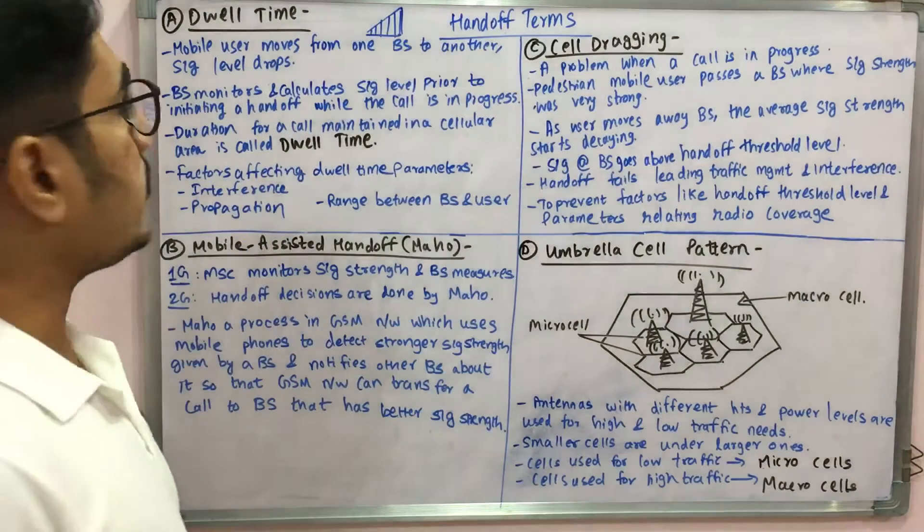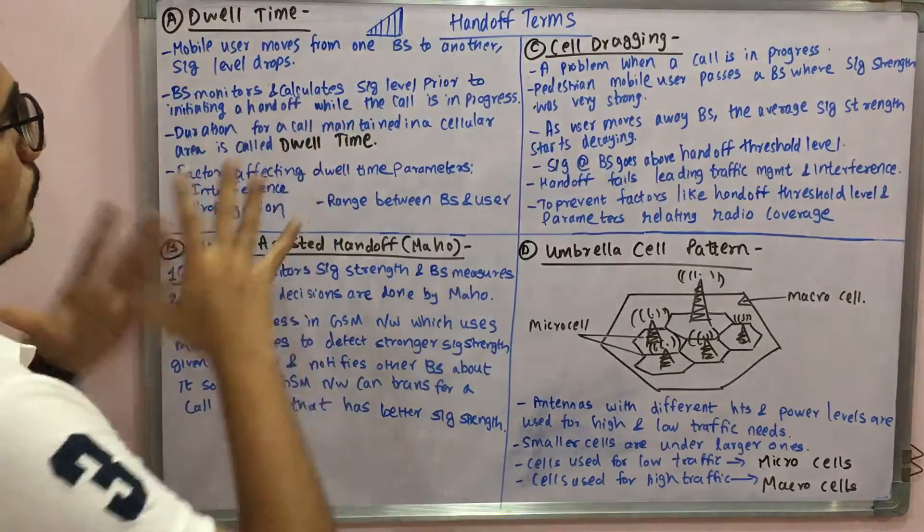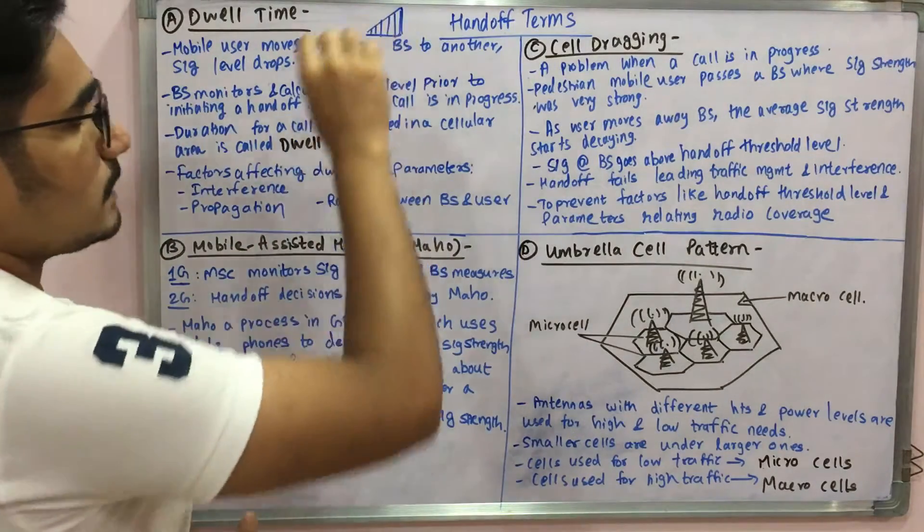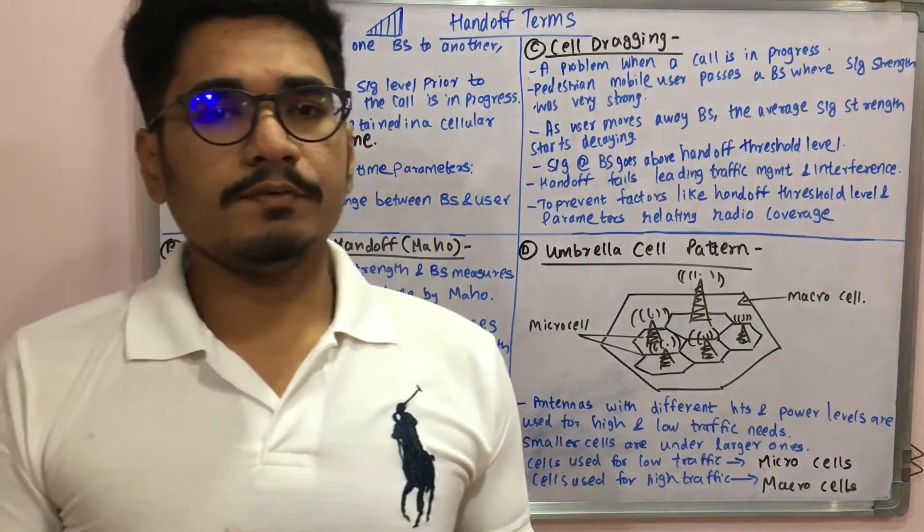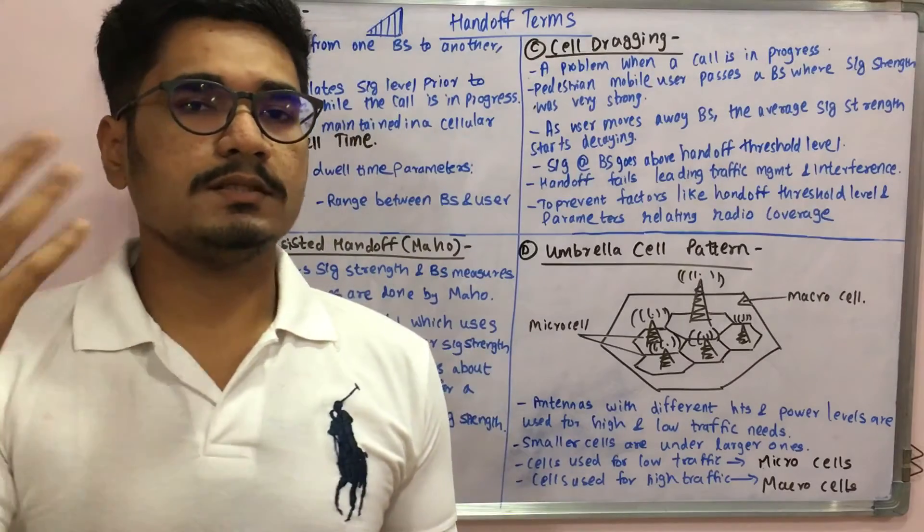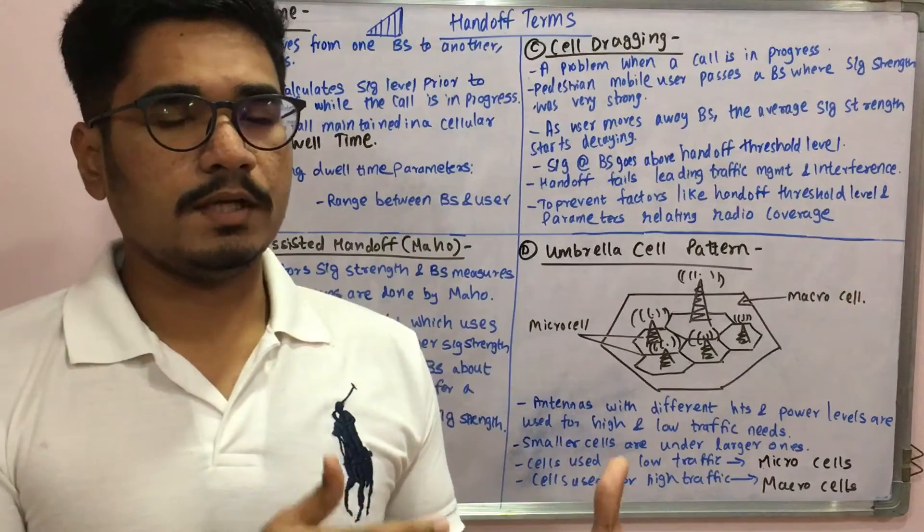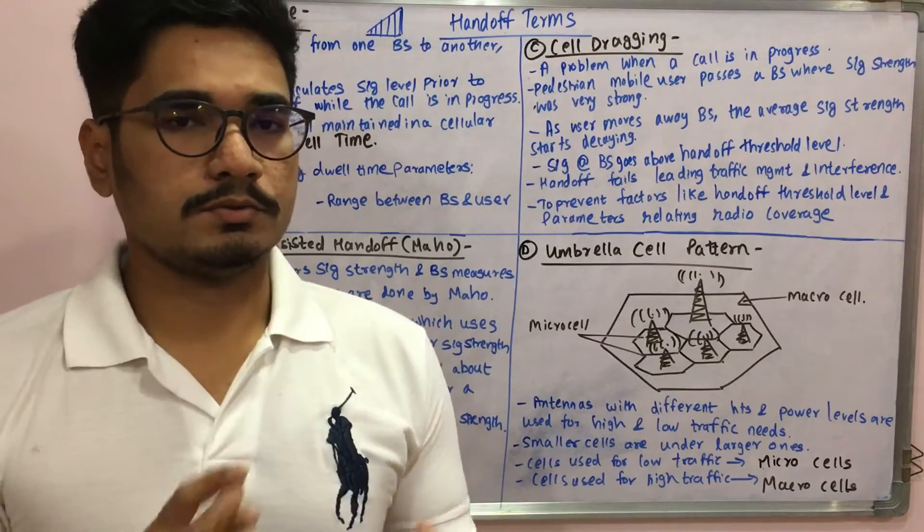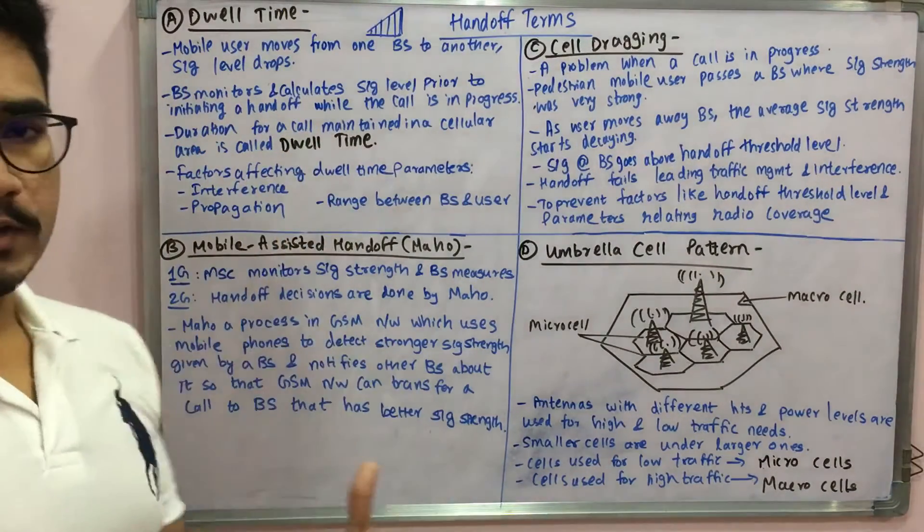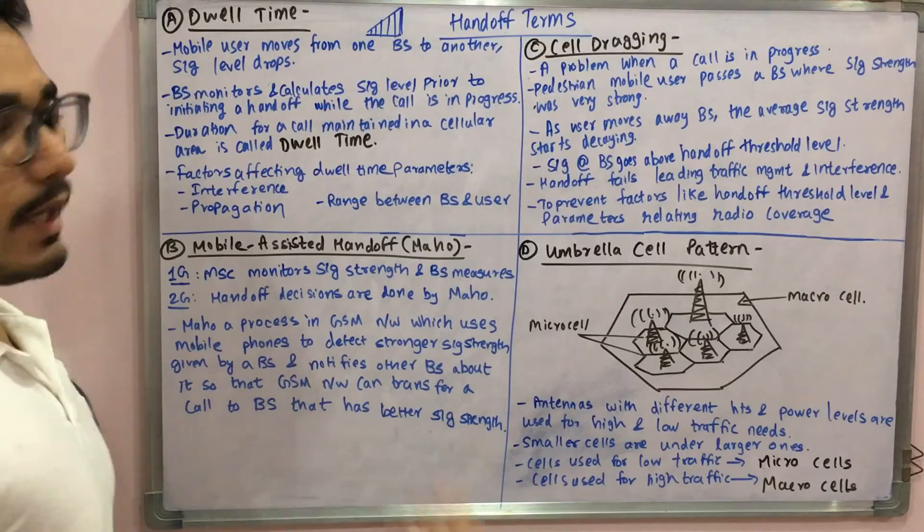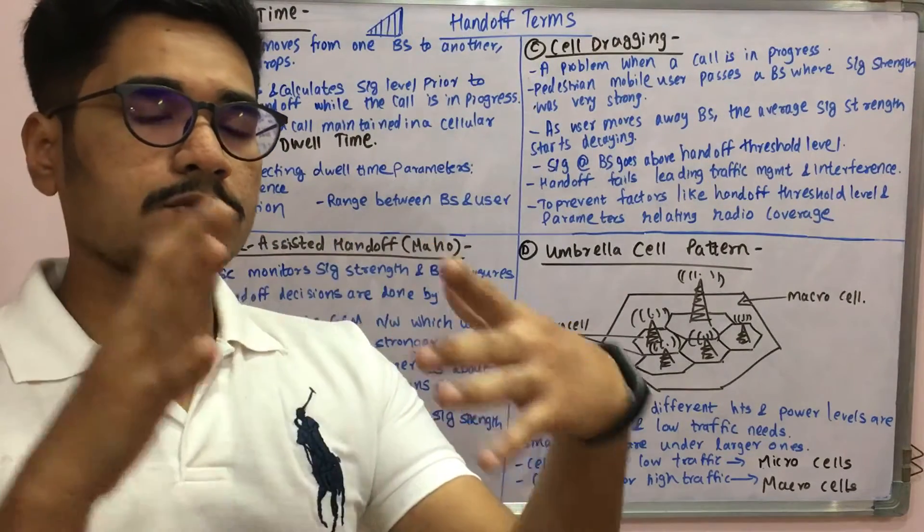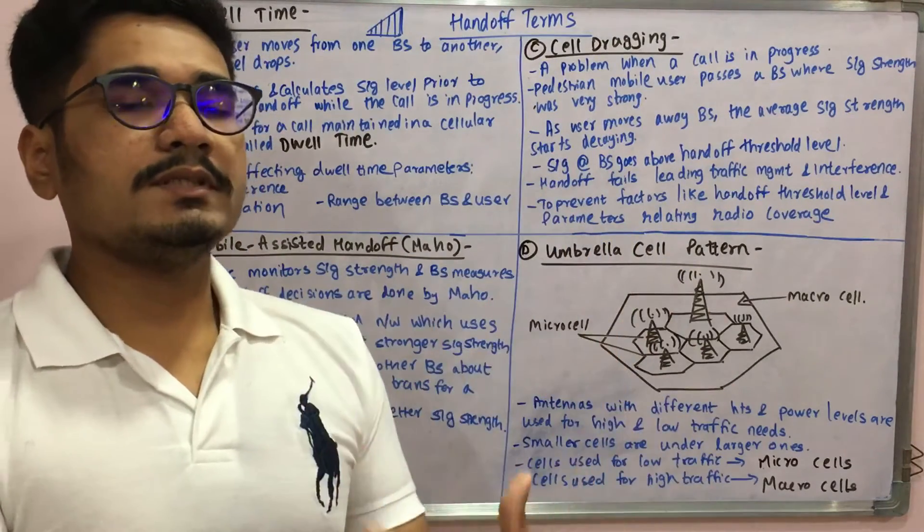Let's start with the very first one: dwell time. Most of you, when you have a telephony conversation, might be having this signal range symbol. Whenever you move to some places, this signal range starts dropping to a considerable level and at some time it may show you a cross, meaning there is no radio coverage for that region. Whenever a mobile user moves from one base station to another base station, the signal level drops. At the initial point it may be a stronger signal, then later when you move, the average signal starts decreasing.